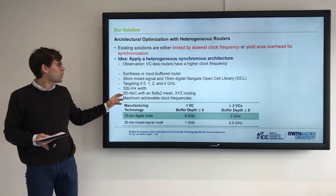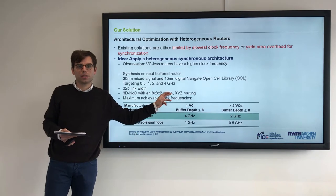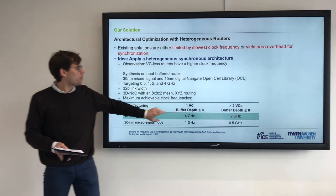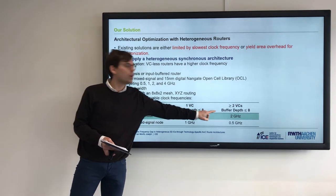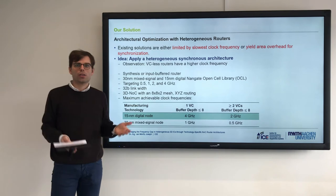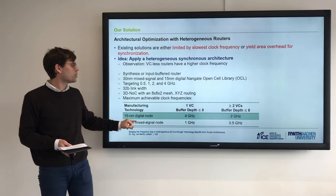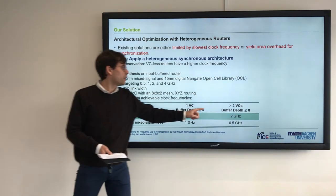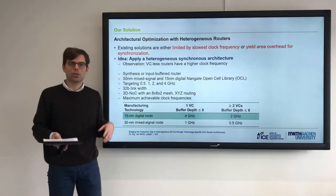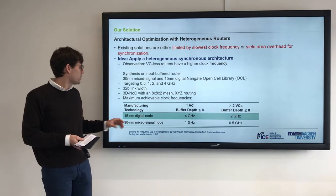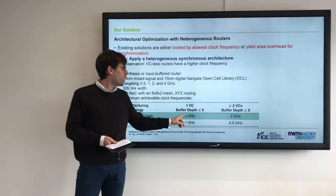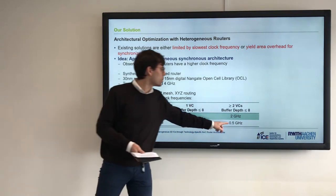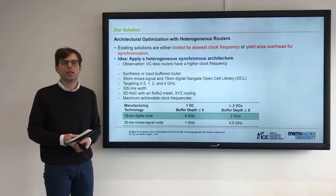We used a 3D NOC with 8x8x2 mesh and XYZ routing. Depending on whether you use a VC-less router or a router with VCs, you can achieve a higher clock frequency. For the digital node, VC-less routers achieve up to 4GHz clock frequency and 2GHz for a router with VCs. For the mixed-signal node, you have approximately one-fourth of the performance: 1GHz without VCs and 0.5GHz when using VCs.